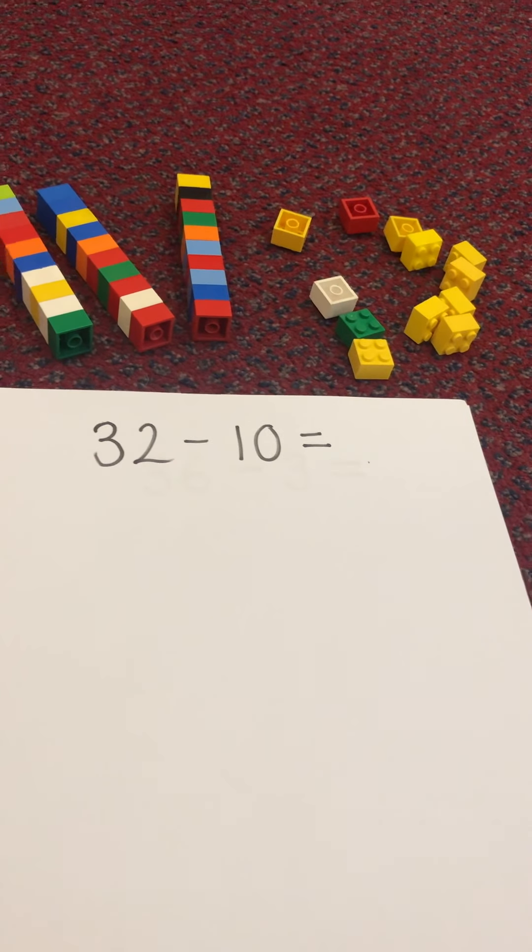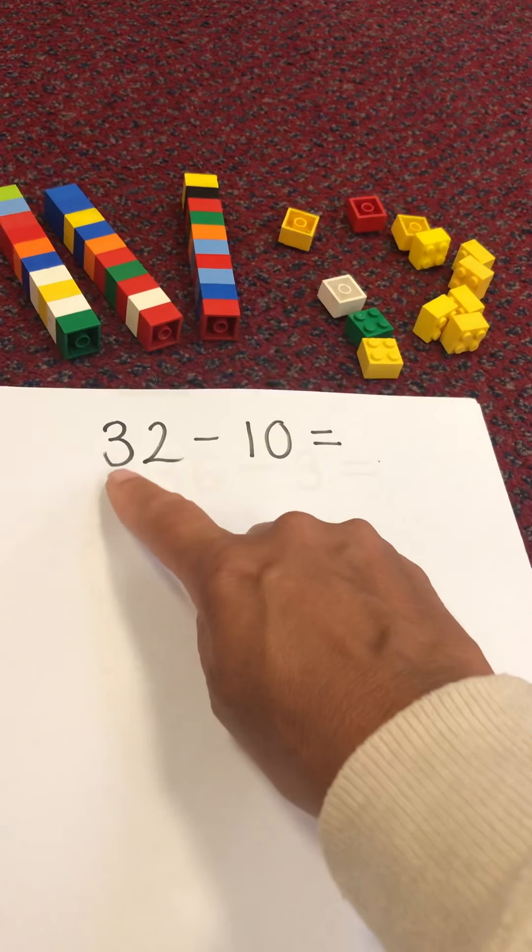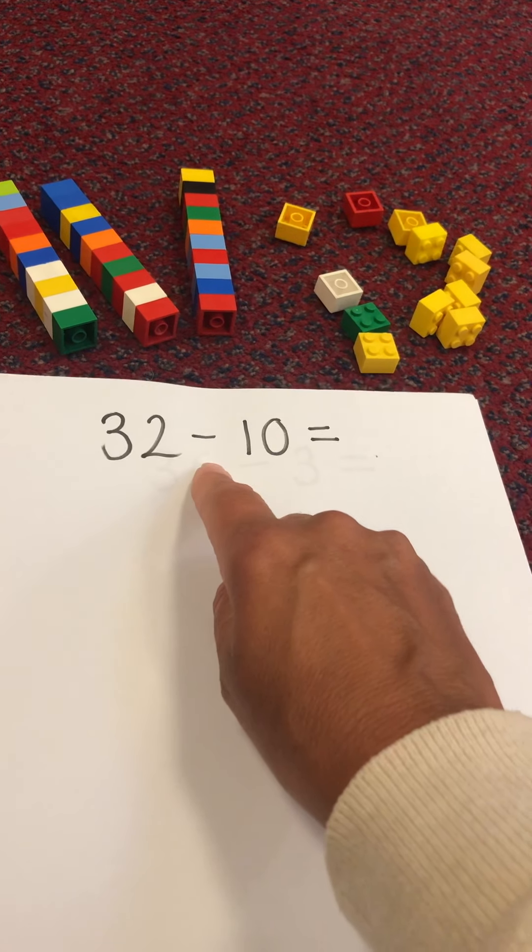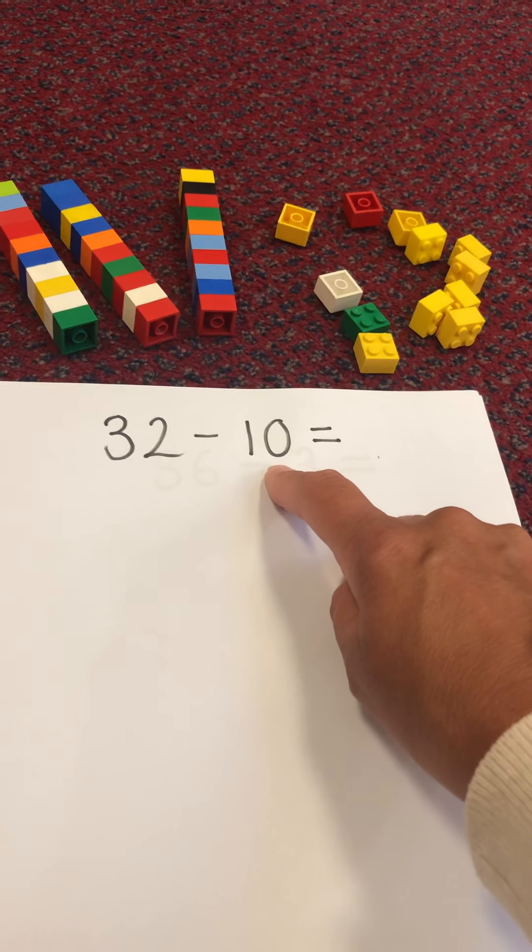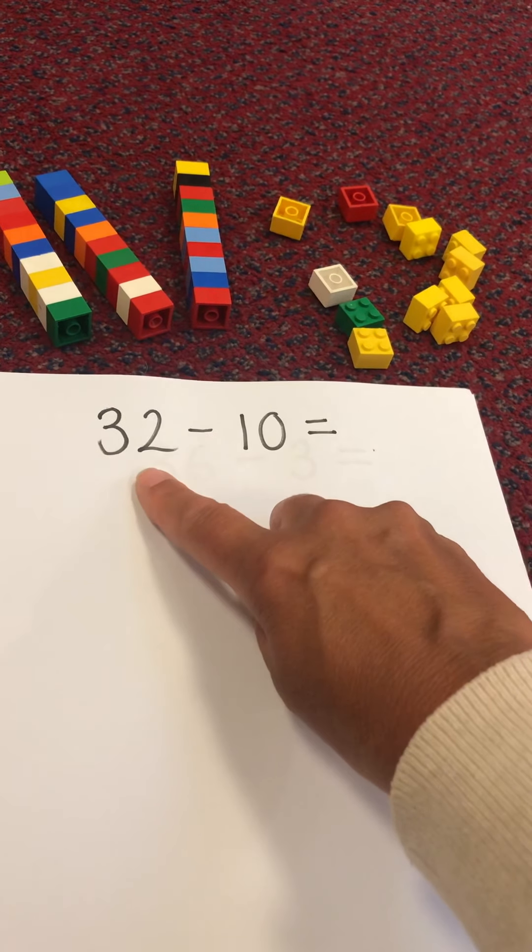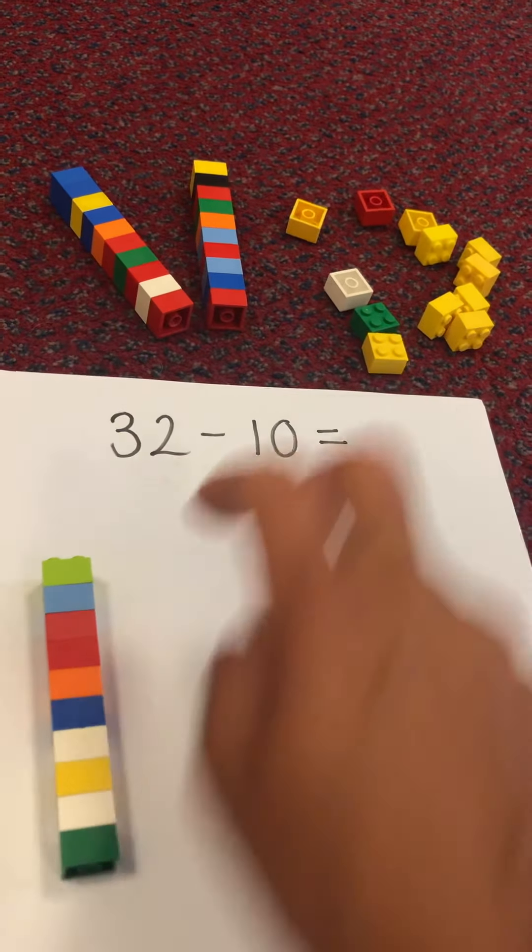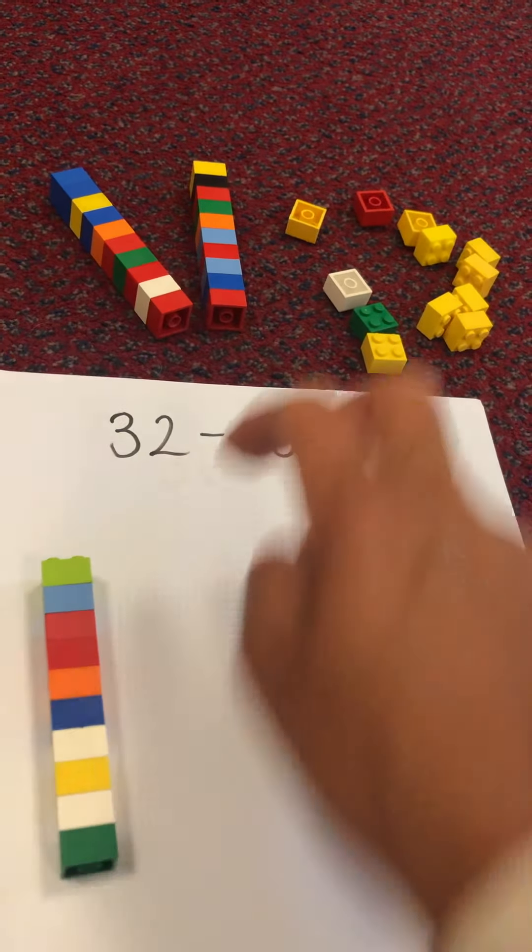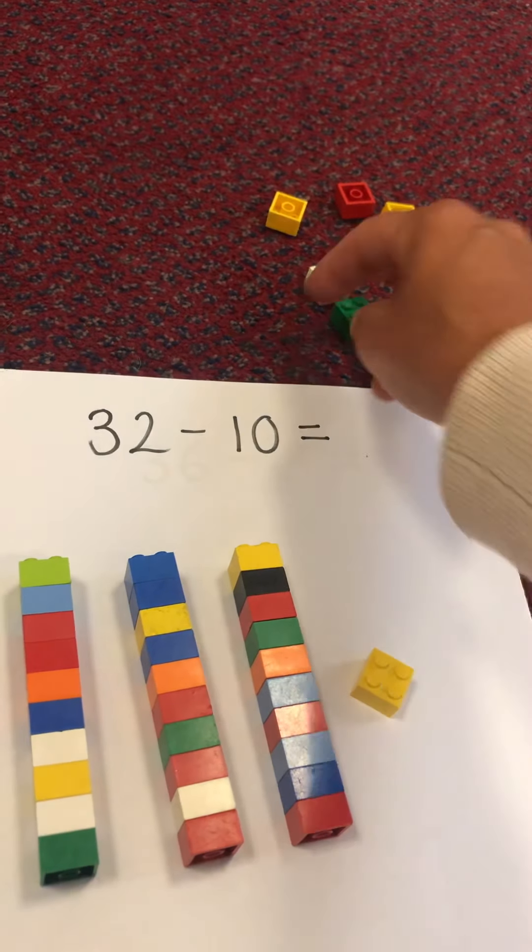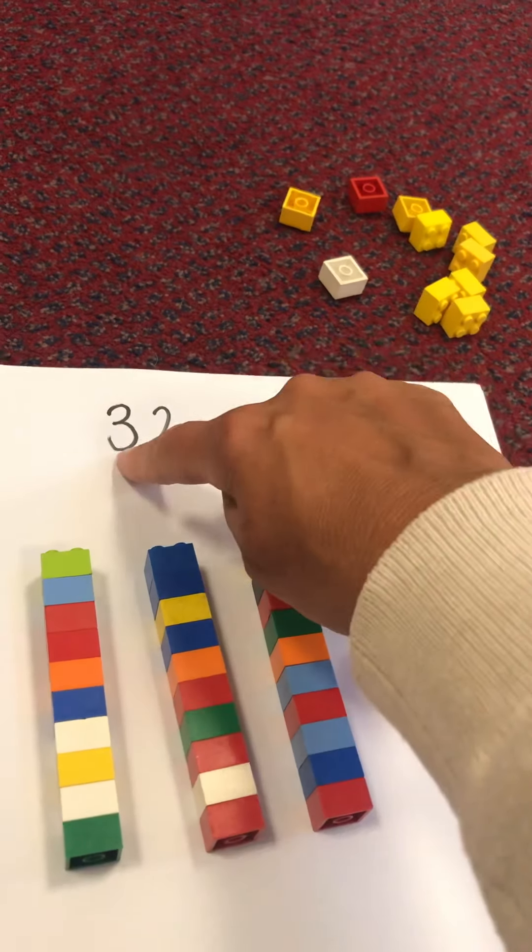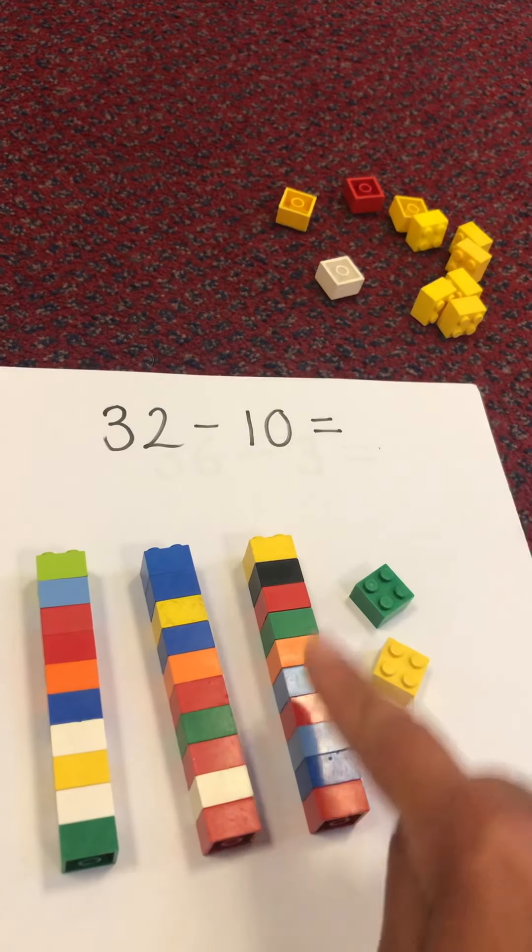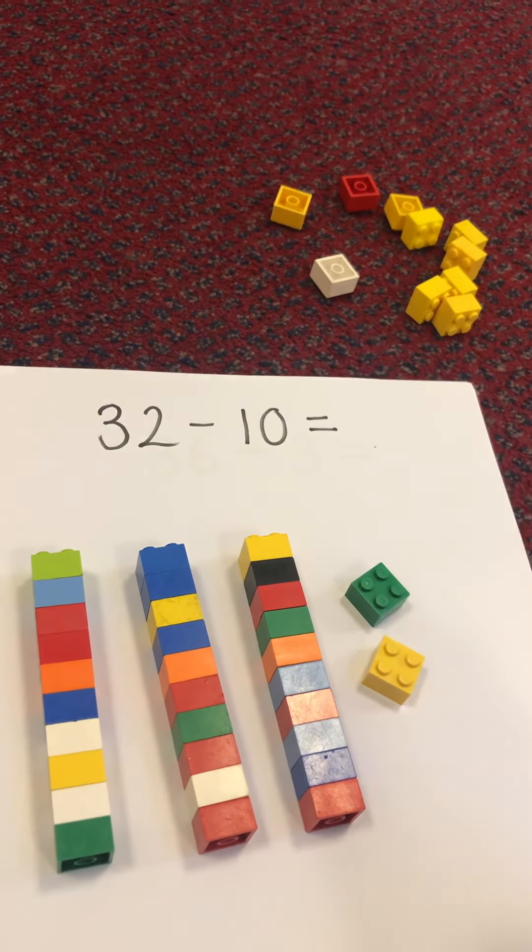What does this subtraction say? 32 take away 10. So what do I need to get out first? 32. Ten, twenty, thirty, thirty-one, thirty-two. Let's check that I've got three tens and two ones. Well done.